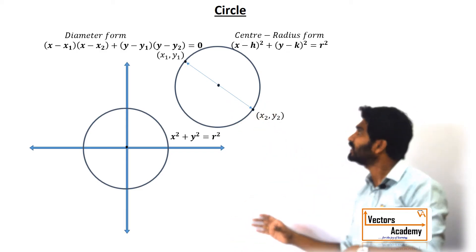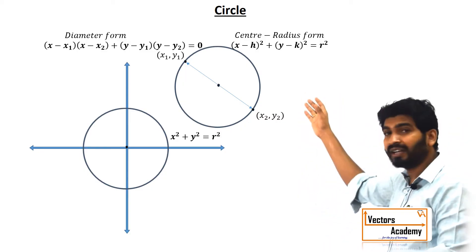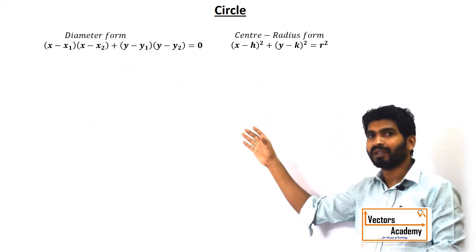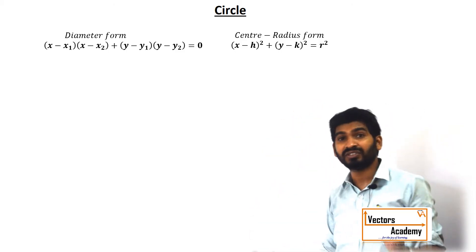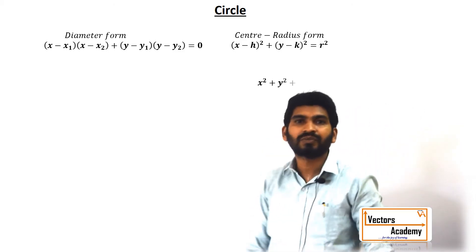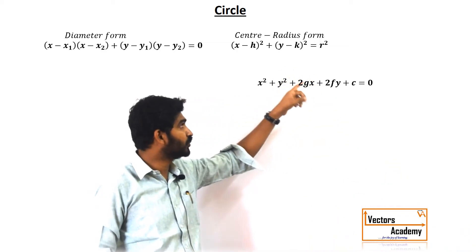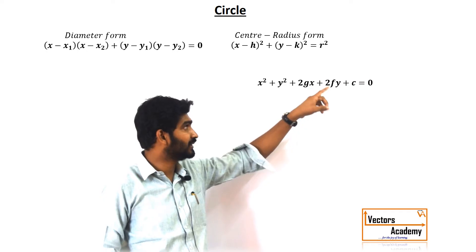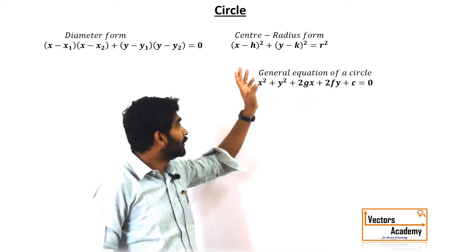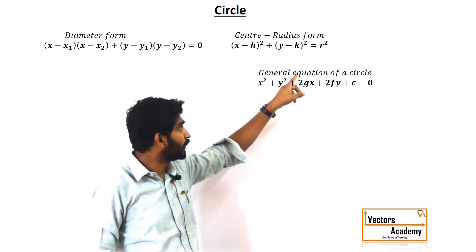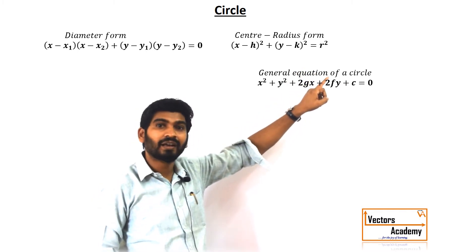Now the circle can either be found out in the center-radius form or the diameter form, and simplifying these equations will give you the general equation of a circle, which looks like x² + y² + 2gx + 2fy + c = 0. There will be a term of x², y², a term of x, a term of y, and a constant.